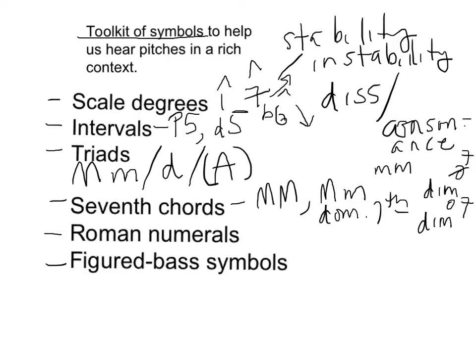All seventh chords are dissonant, but they have different flavors of dissonance. And a lot of them has to do with things we already know, the kinds of intervals that are in them, what scale degrees they occur on, what kinds of triads they have in their lower triadic base.